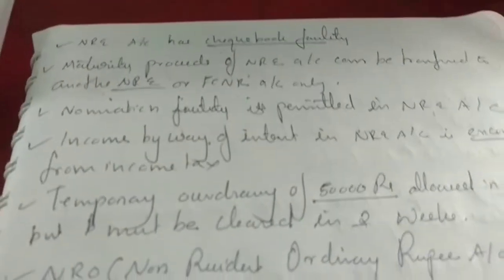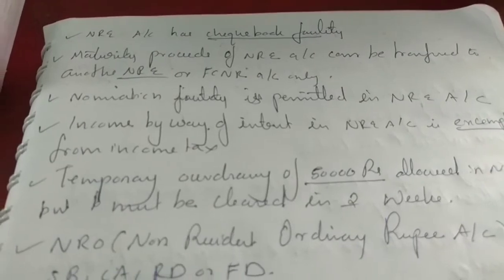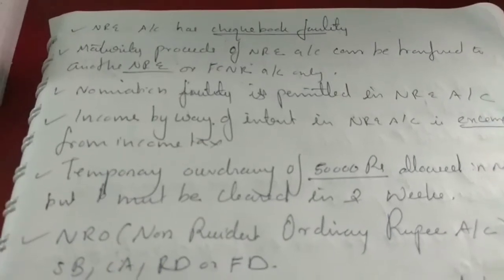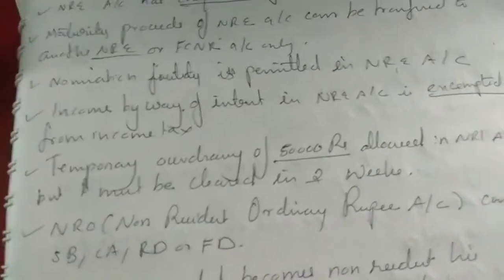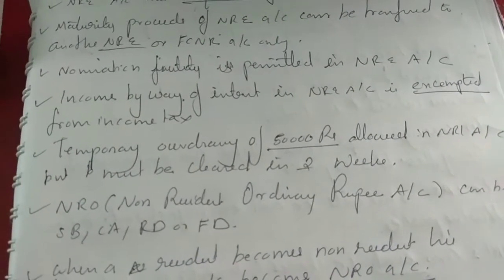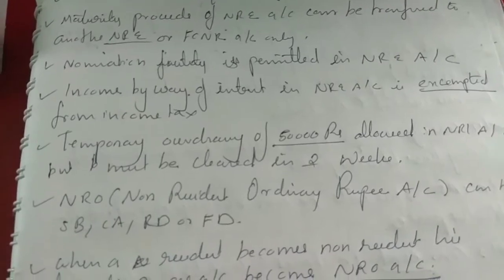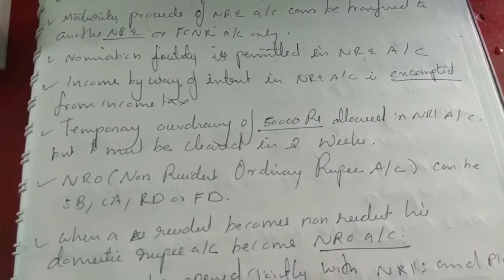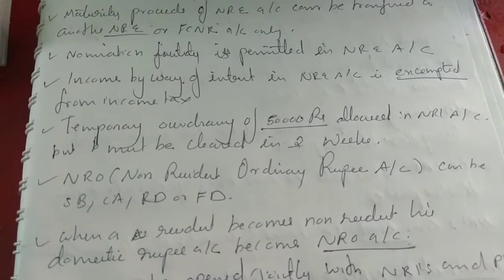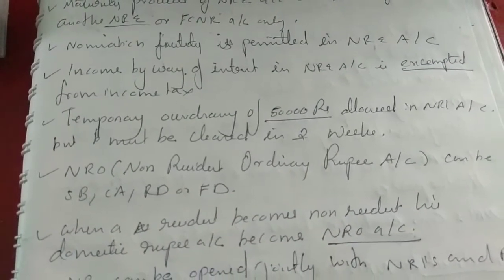NRI accounts have a chequebook facility. Maturity proceeds of an NRI account can be transferred to another NRI or FCNR account only. Nomination facility is permitted in NRI accounts. Income by way of interest in NRI accounts is exempted from income tax. Temporary overdrawing of Rs. 50,000 is allowed in NRI accounts but must be cleared within two weeks.